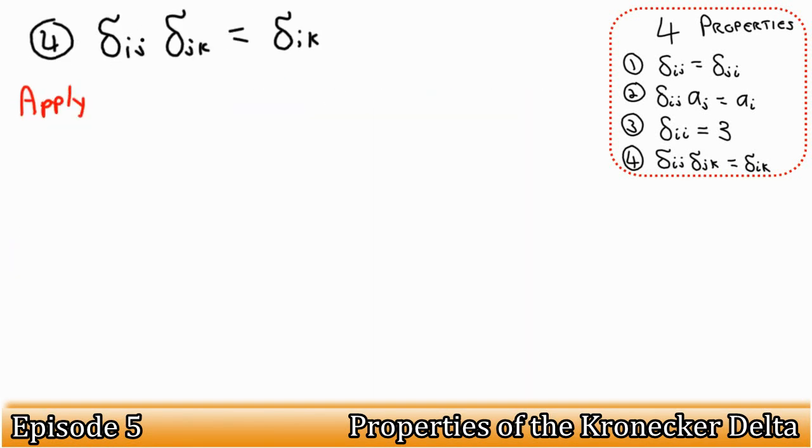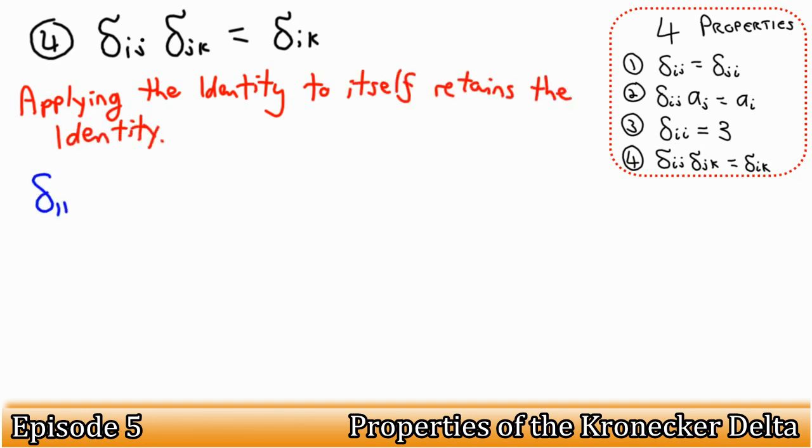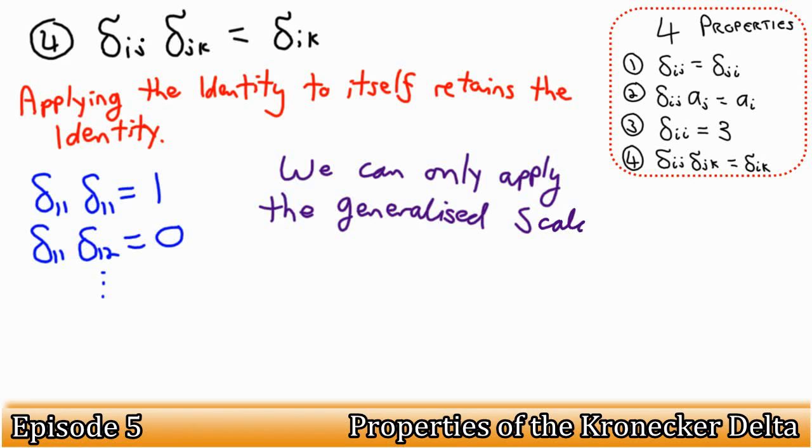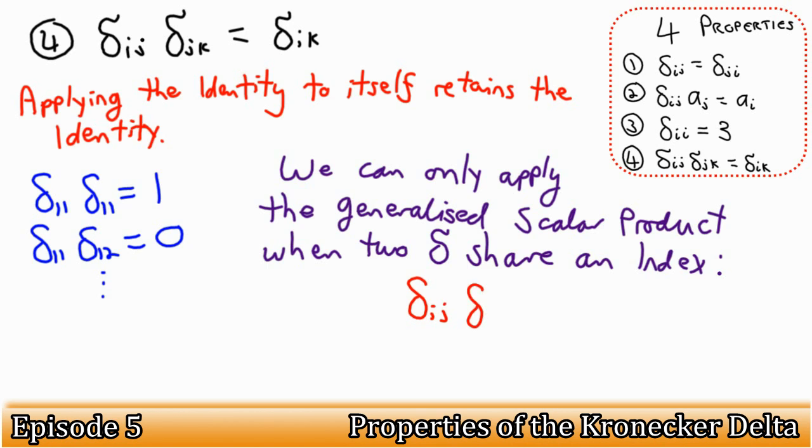Property number 4 is an extension of what we've already seen. Applying the identity matrix to itself retains the identity. In practice, this can only work if the inner tensor in the product is the same. So in this example, delta ij delta jk, we have the second tensor of the first delta, and the first tensor of the second delta, both being j.